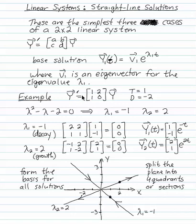For example, y prime is 1, 2, 1, 0 times y. Trace 1, determinant minus 2.